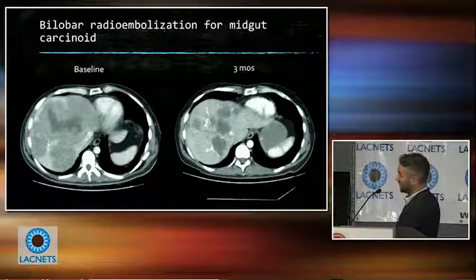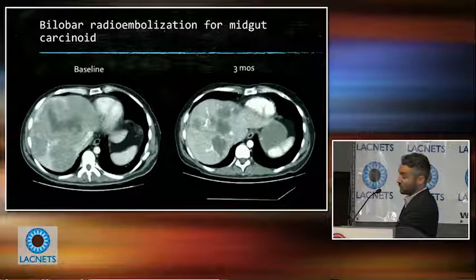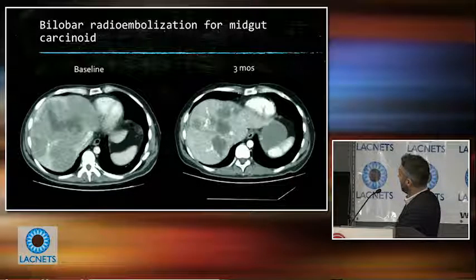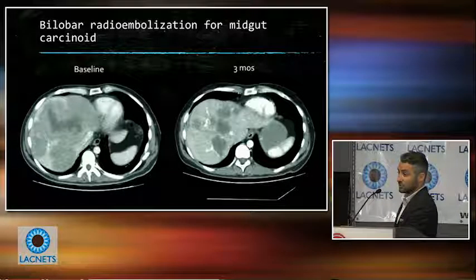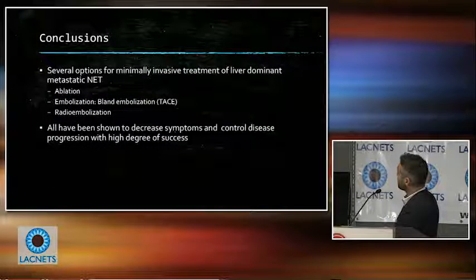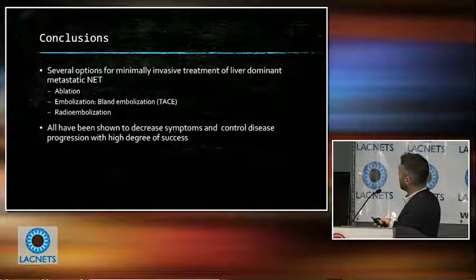Here are CT scans of pre- and post-radioembolization. The dark spots are all tumor at baseline, and at 26 months follow-up the spots are much smaller, with even darker areas representing necrotic dead tissue — a nice result. Here's another bilobar radioembolization for a neuroendocrine tumor: large and multiple smaller dark spots at baseline, and over time everything shrunk quite well. Another bilobar case for midgut carcinoid shows fairly bulky disease at the upper limits of what we'd treat with radioembolization, and three months later there was quite a significant response.